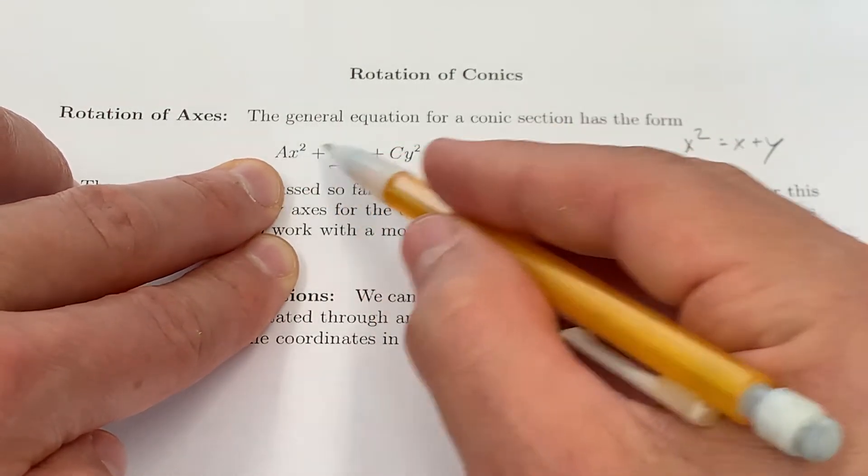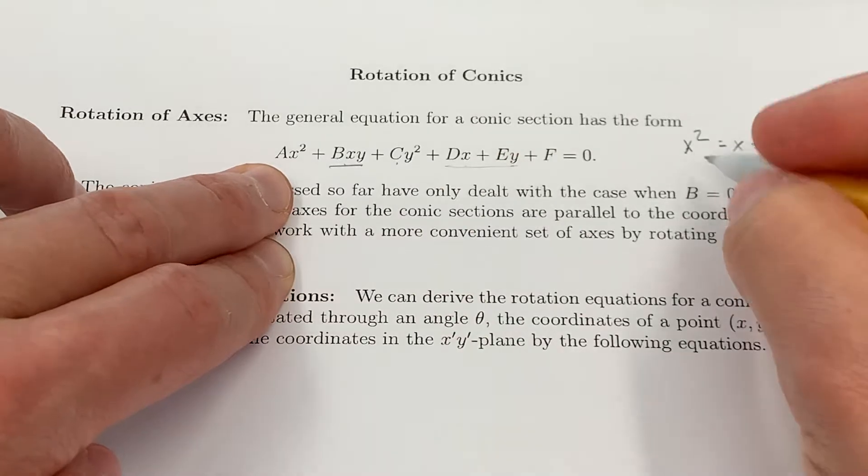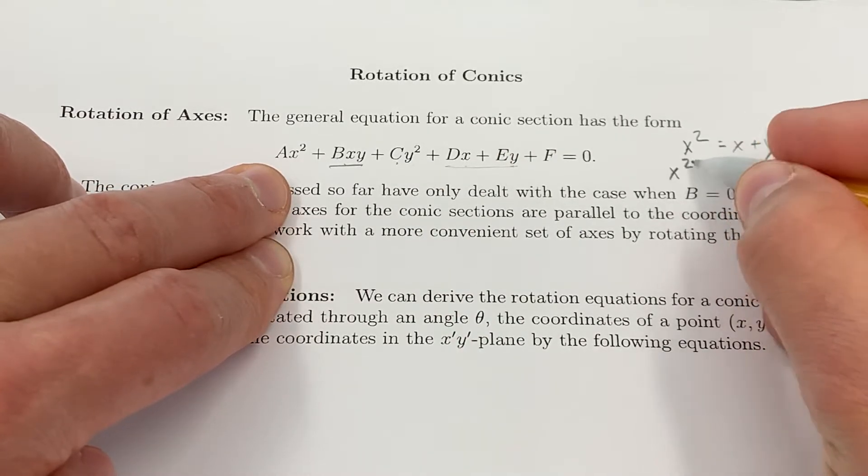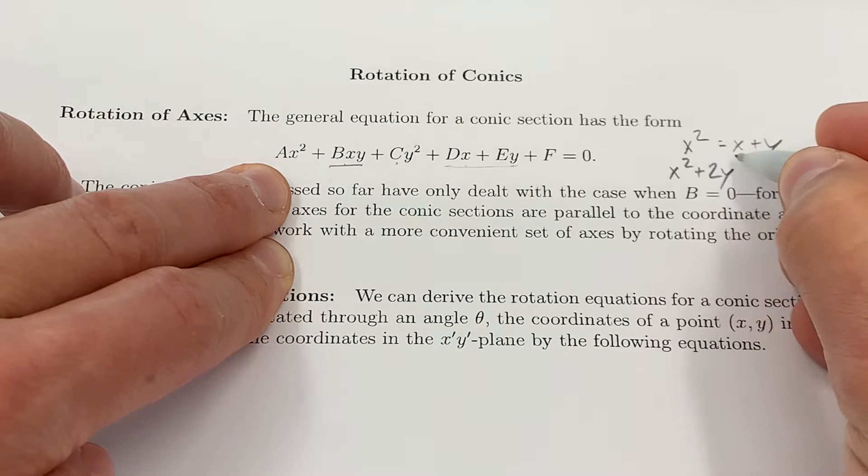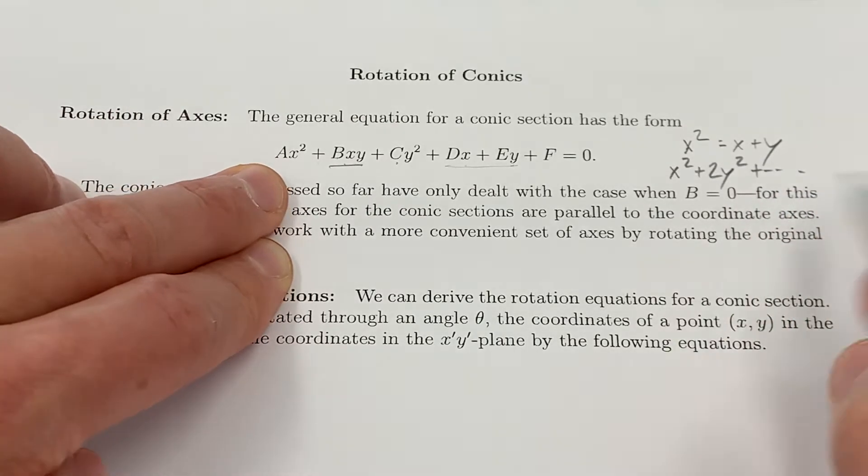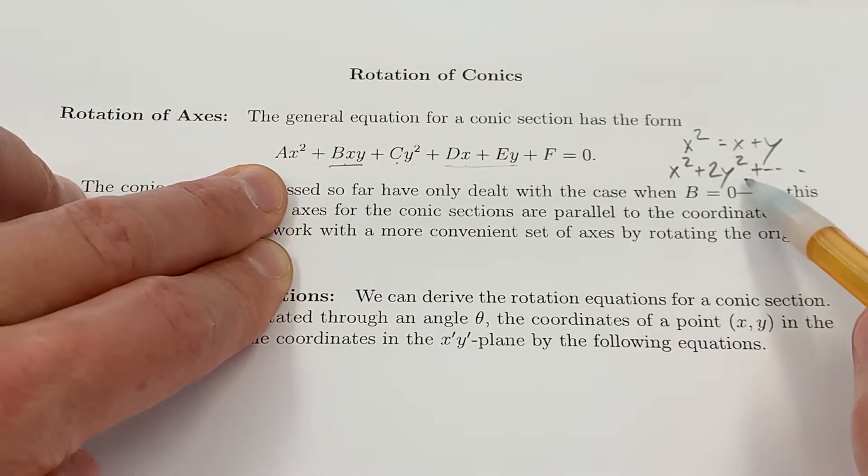If a was non-zero and c was non-zero, well if they're both positive, if you have an x² + 2y² plus blah blah, you can imagine that's an ellipse. If they're both negative, multiply everything by negative 1 and you've got that again.